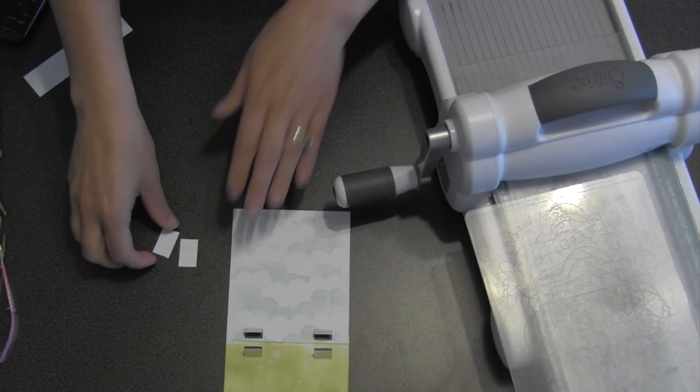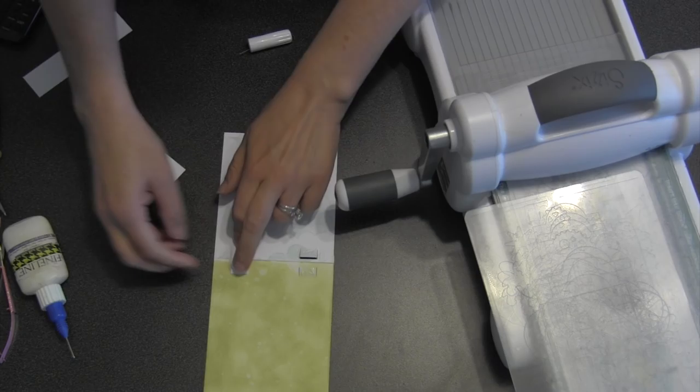The width may change depending on which die set you're trying to convert. So the Eiffel Tower, the fence, those have skinnier tabs, so you just have to measure how wide your tab is to determine how wide you should make your little joiners.